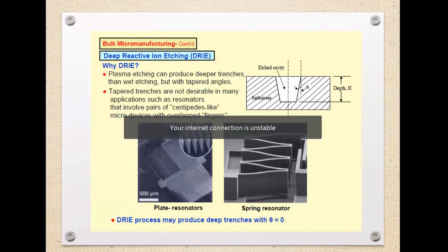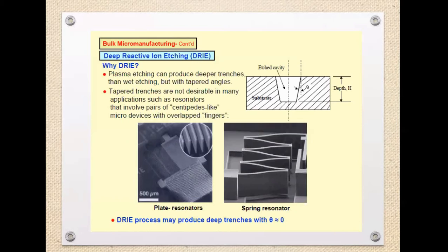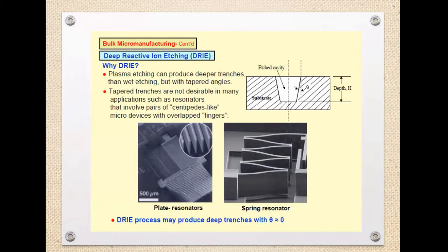We must maintain the cavity angle very low. In DRIE we try to make virtually vertical walls — theta is not exactly zero but almost equal to zero — producing virtually vertical walls with a high aspect ratio. The aspect ratio is the ratio of depth to the dimension on the surface, essentially the ratio of depth to length or breadth.